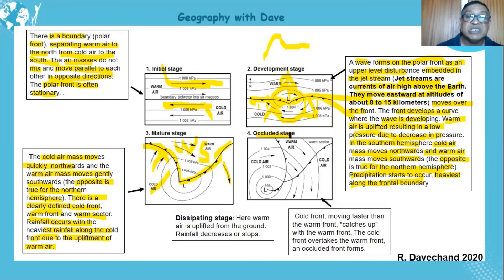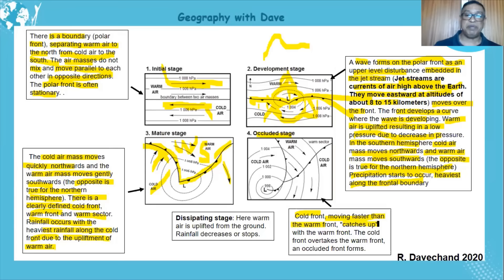Next is the occluded stage. Remember, the cold front is moving faster than the warm front because of the steeper pressure gradient. What happens is the cold front, moving faster, catches up with the warm front.